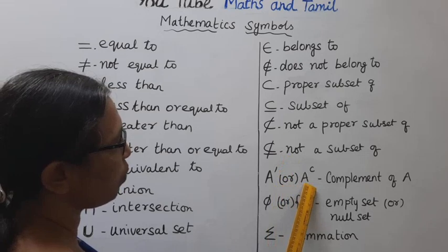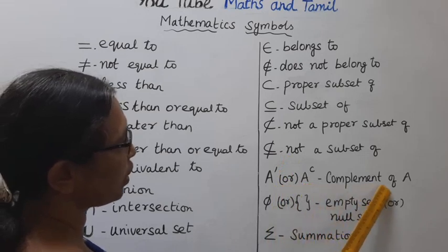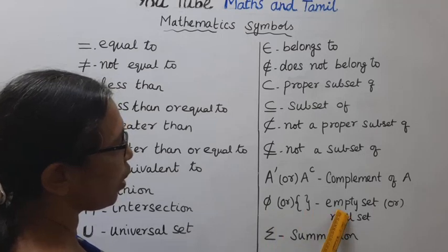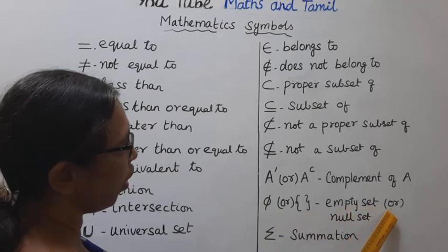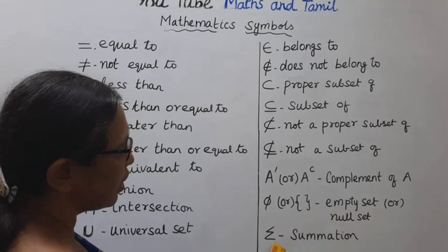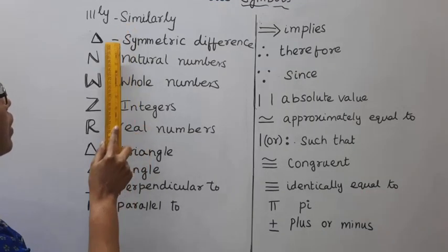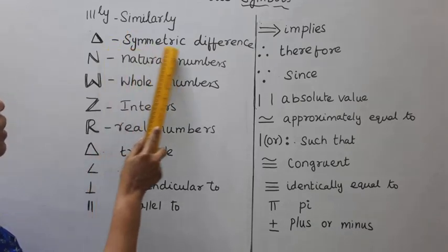A dash or A complement of A. Complement of A. This is empty set or null set. Summation. Symmetric difference.